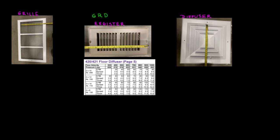The most important part of these air devices is that we need to control velocity. For commercial applications, we also need to consider NC, which is noise criteria. We need to find a perfect balance because more velocity means more noise. For grills, it's recommended to have the velocity between 300 to 500 FPM — feet per minute.